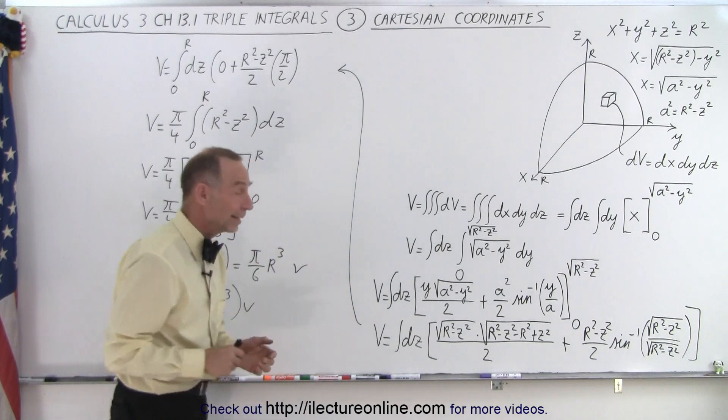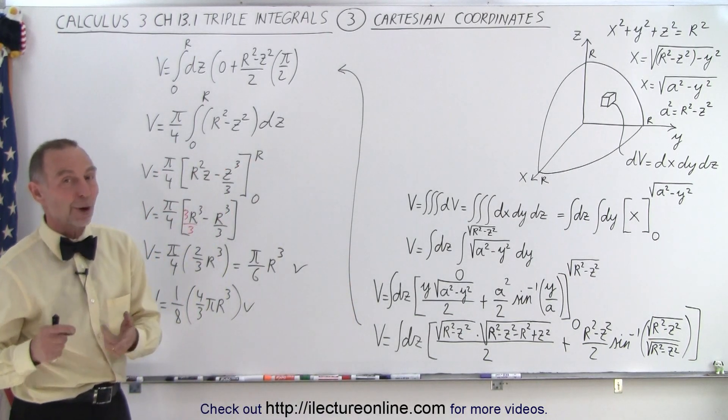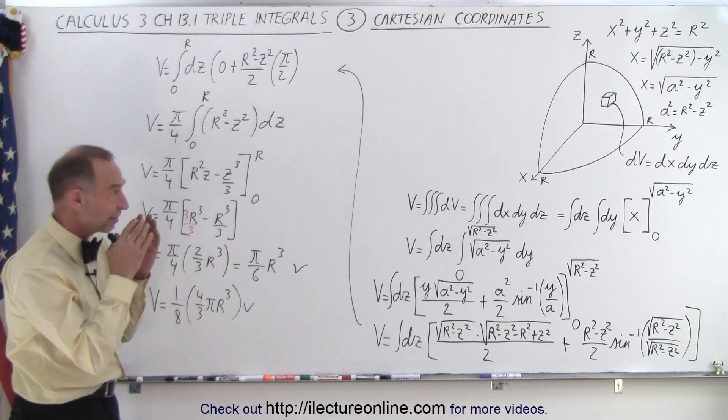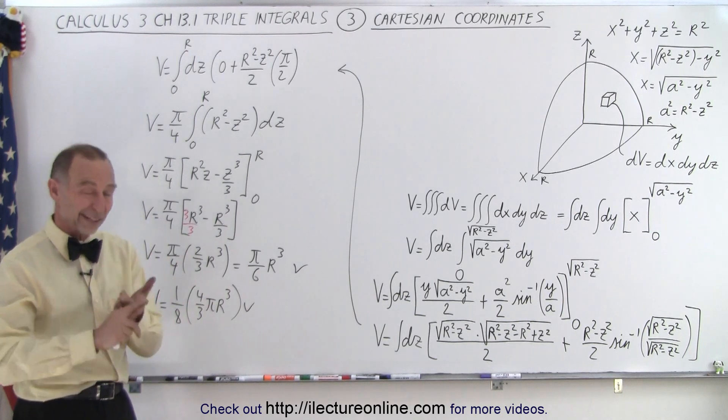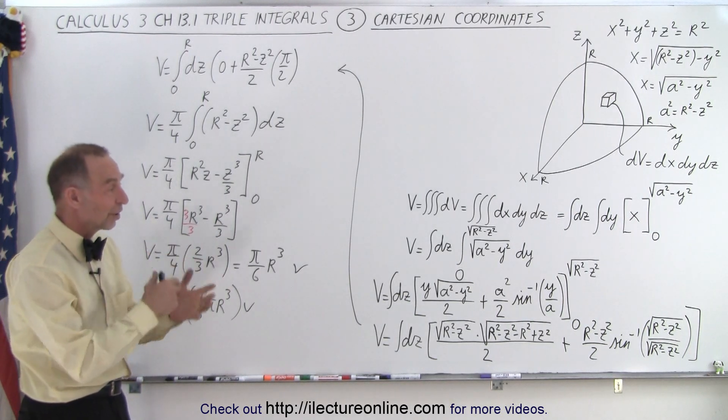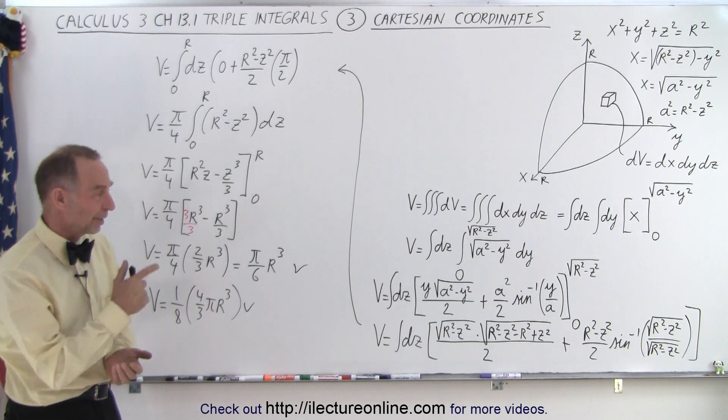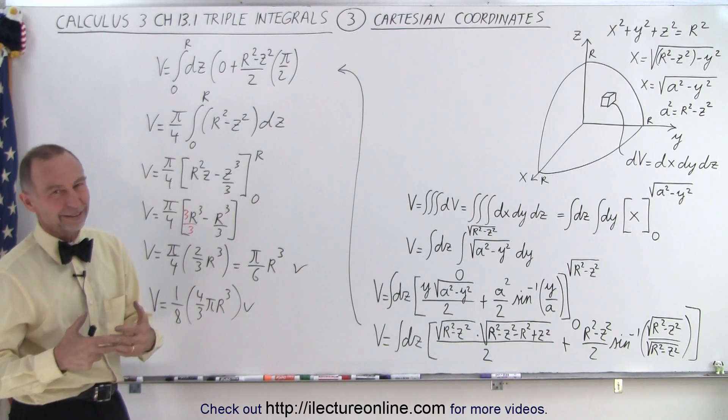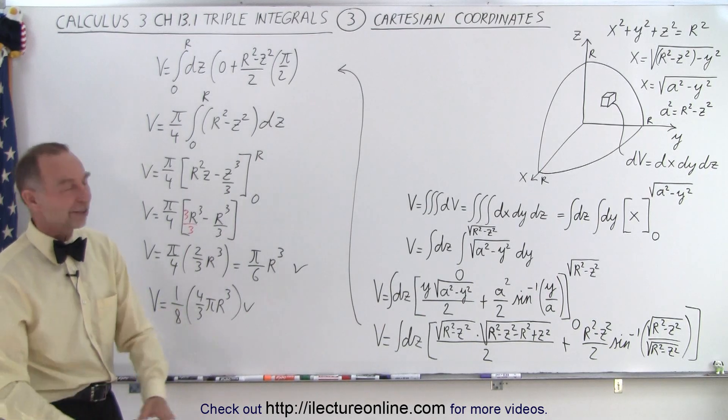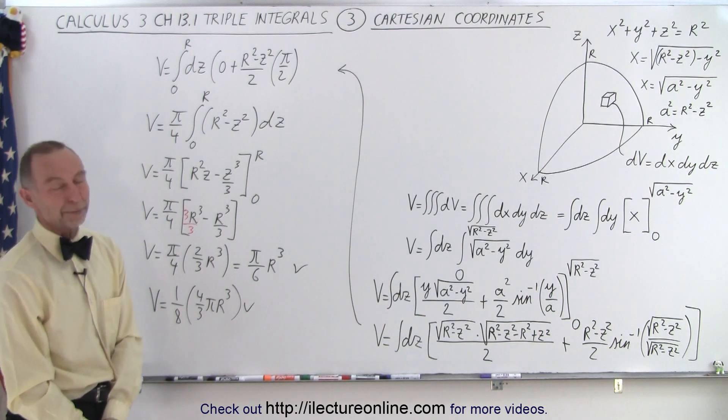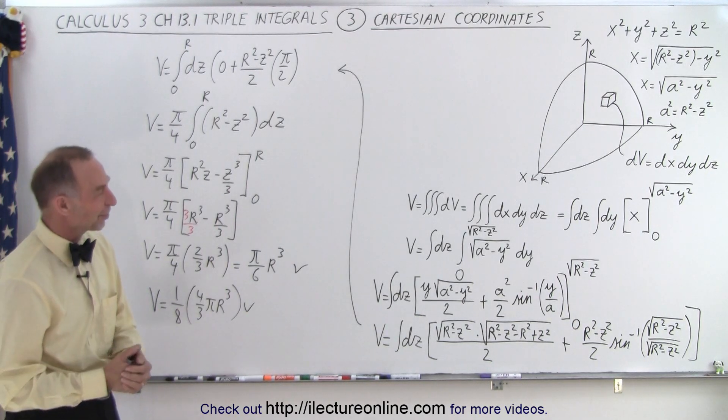But what we did show, however, that it can be done with all three coordinate systems. You can find the volume of a sphere with cylindrical, spherical, as well as rectangular or Cartesian coordinate system. It can be done, but in this case that's not the least desirable, it would be the least desirable method, at least in my opinion. And that is how it's done.